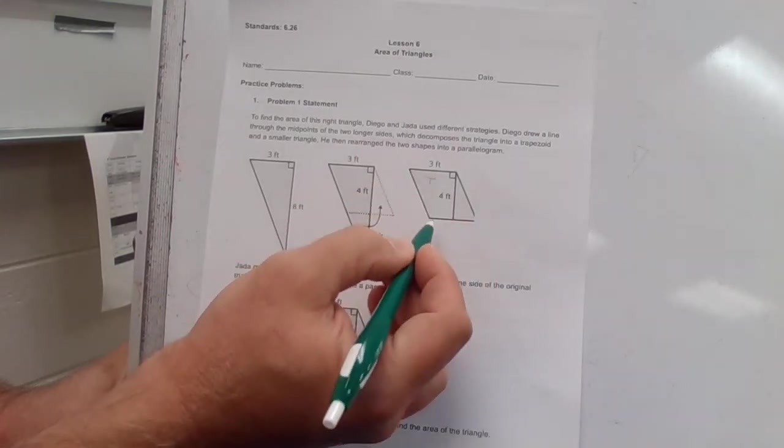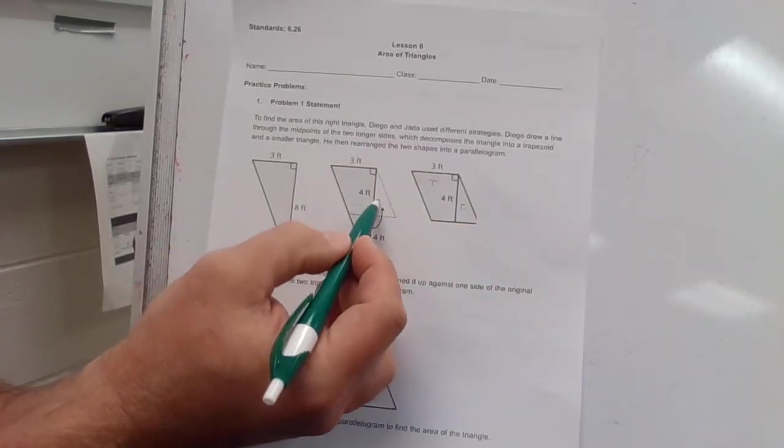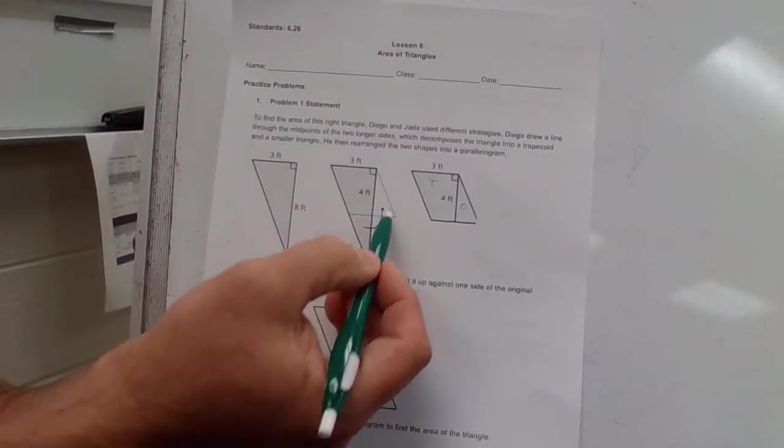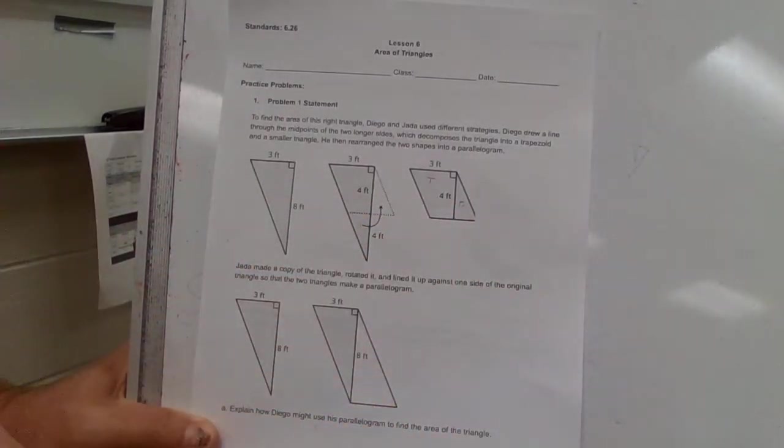What they've done here is basically move that triangle up here, so it's kind of no longer down there, it's kind of up there. That should be all the way down, I'm assuming. He then arranged the two shapes into a parallelogram.